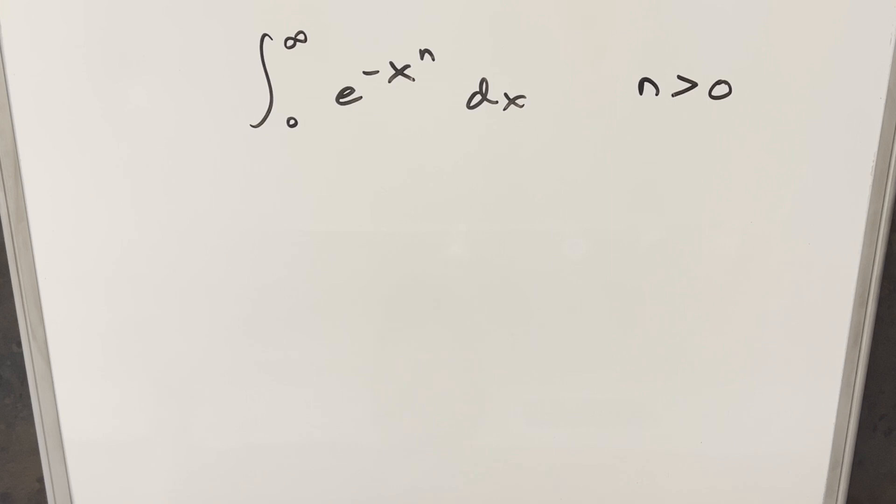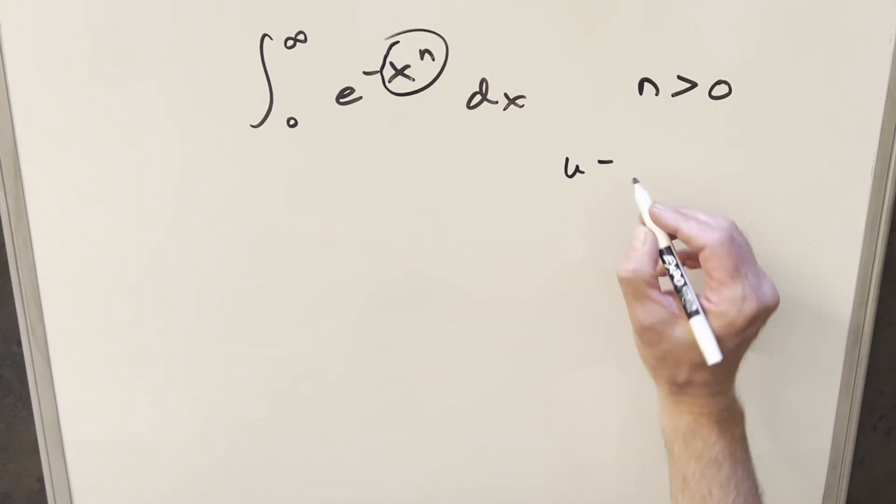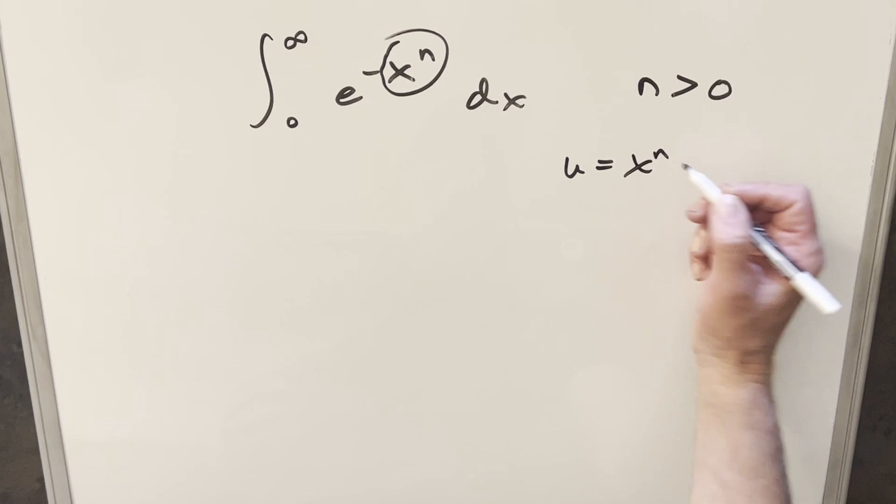What I want to do is basically the same steps I did in that other video. We want to set this up to use the gamma function. To start, let's make a u-substitution. I'll say u equals x^n.